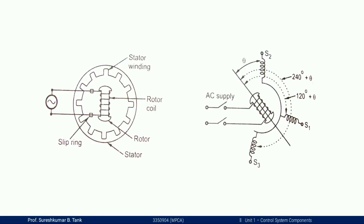Now we will look at the construction. There are two main parts: first is the stator and second is the rotor. The stator is the stationary part and the rotor is the rotating part, involving both mechanical and electrical parts. The stator consists of a laminated core with slots cut on its inside periphery.